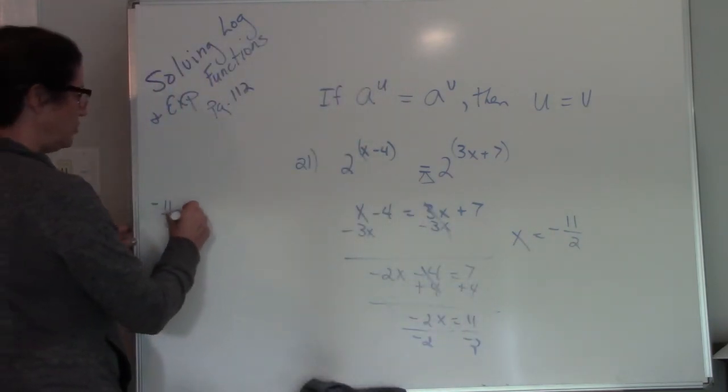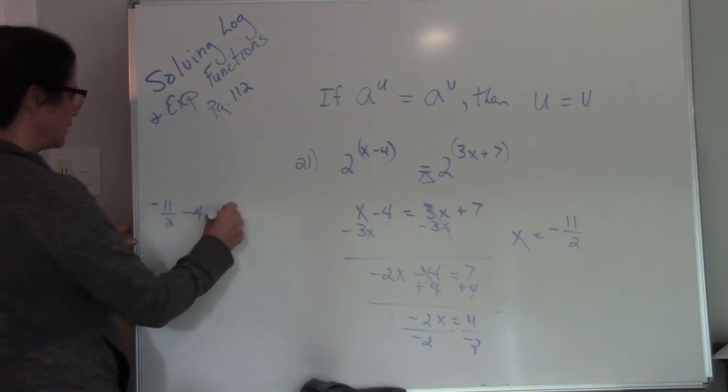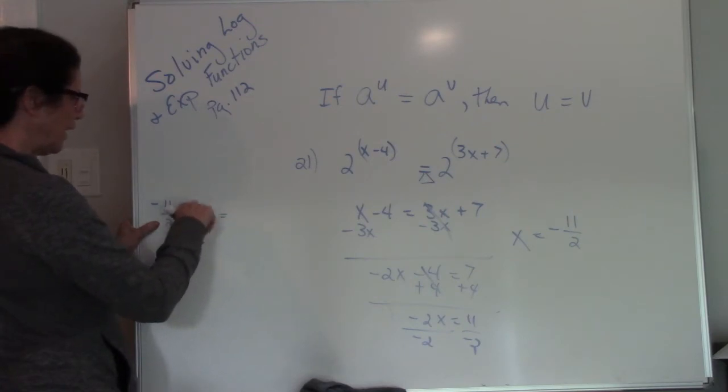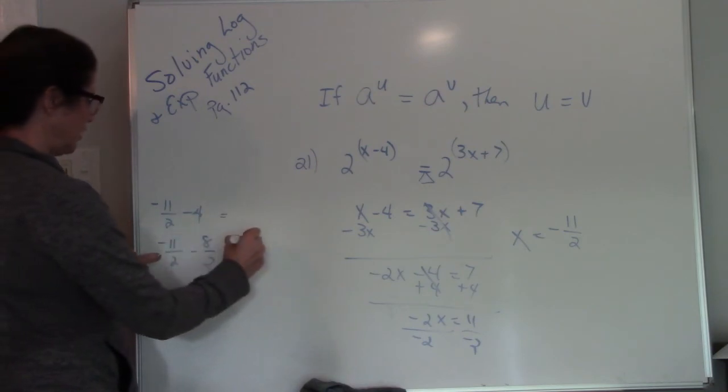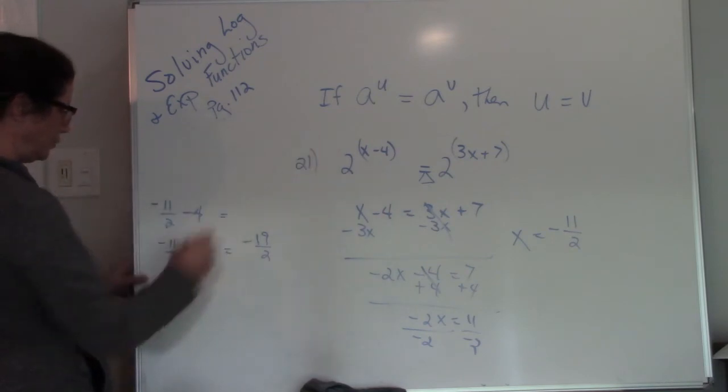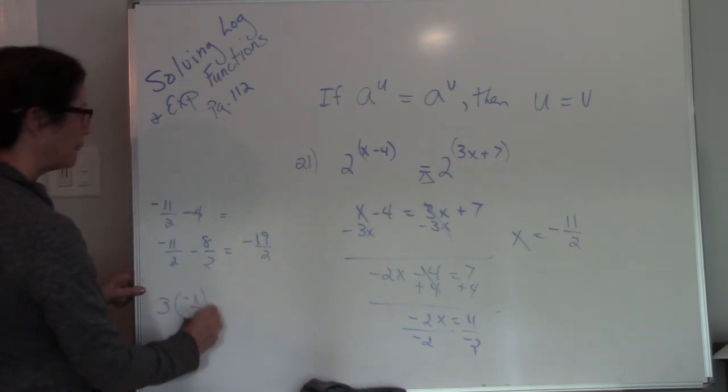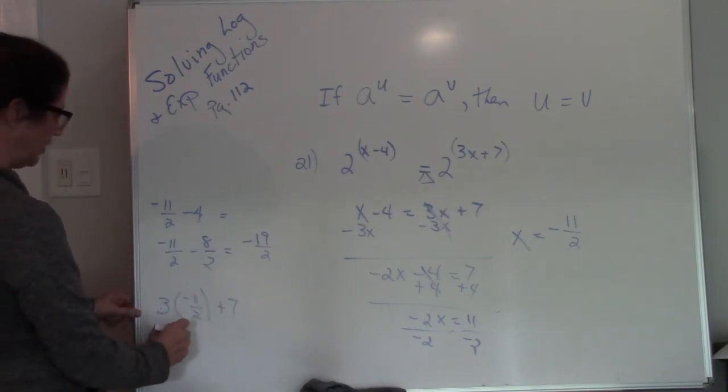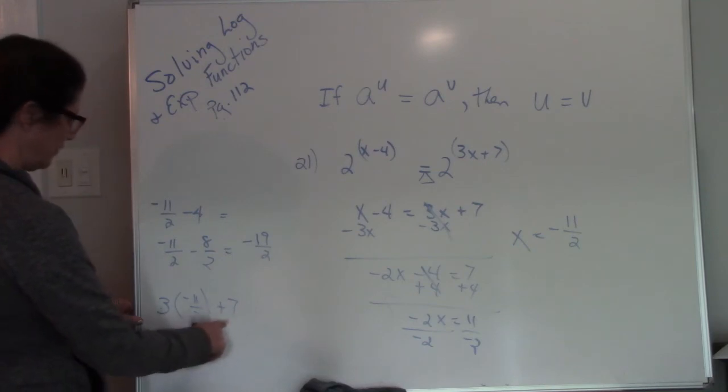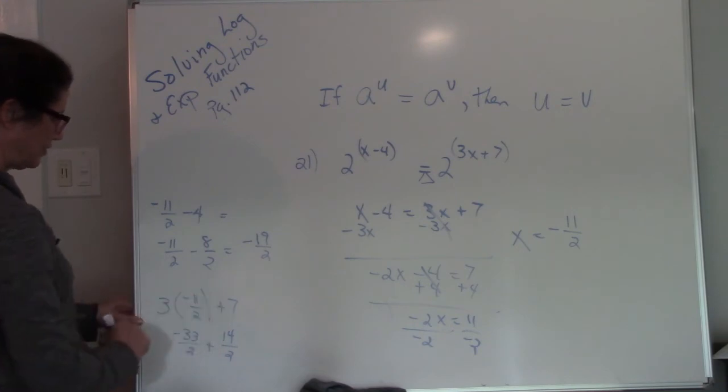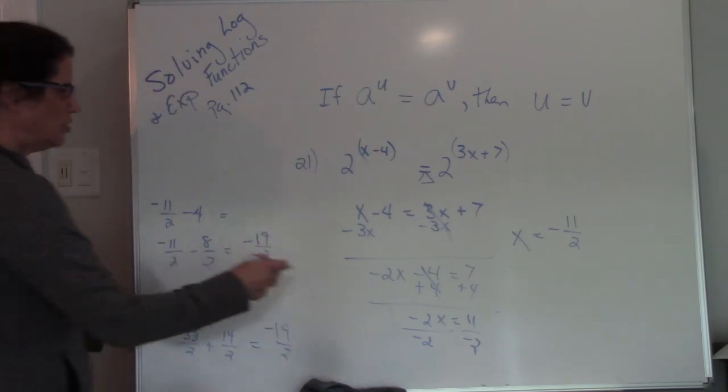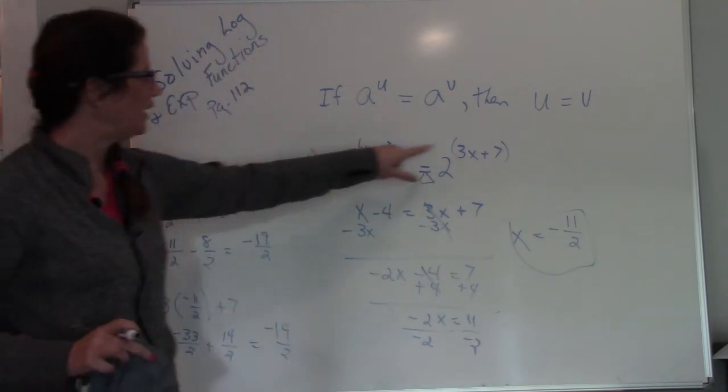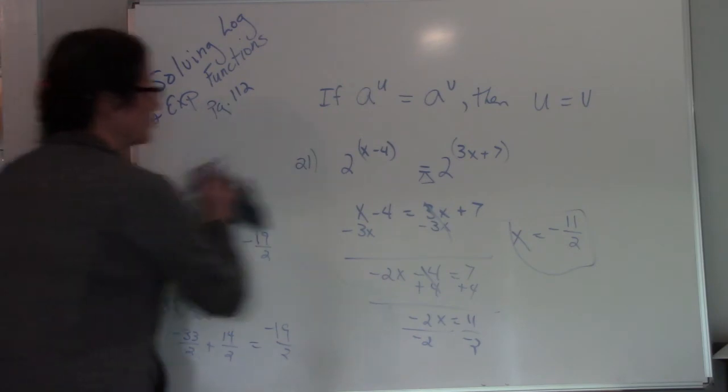Now, if I plug that into my equation, negative 11 over 2 minus 4. Remember, because we have to have a common denominator, 4 times 2 is 8. 8 over 2 is the same as 4. So this equals negative 19 over 2. I can plug it back into the other side. 3 times negative 11 over 2 is negative 33 over 2. 7 times 2 is 14. Negative 33 plus 14 is negative 19 halves. They equal the same thing, so I know that this is the correct answer. Let's try another one.